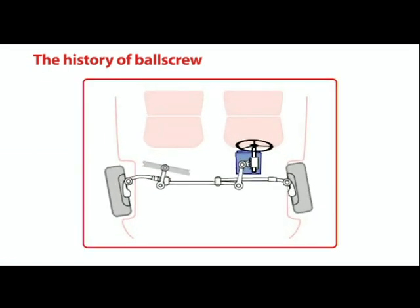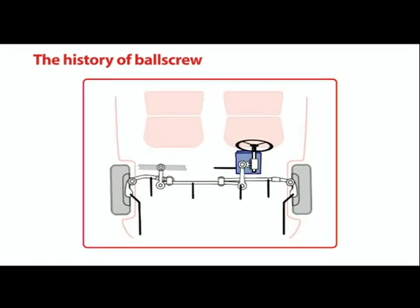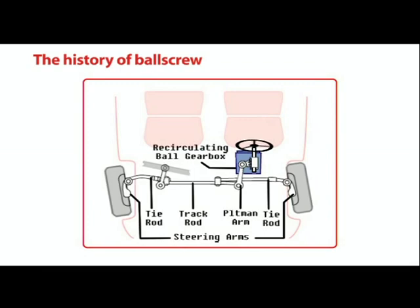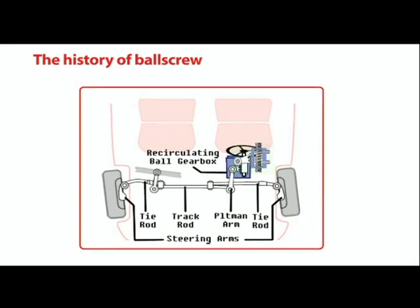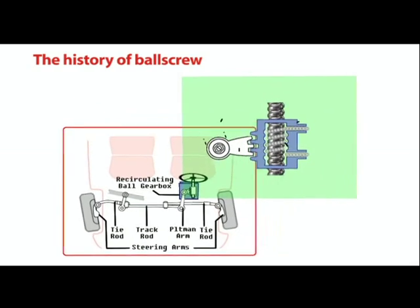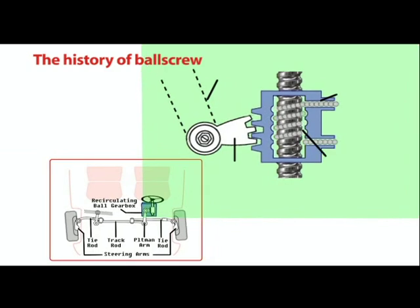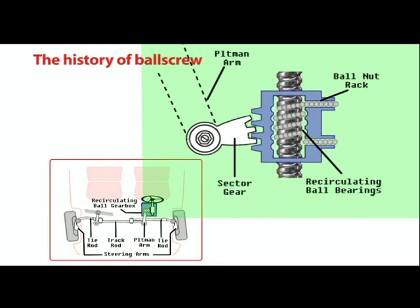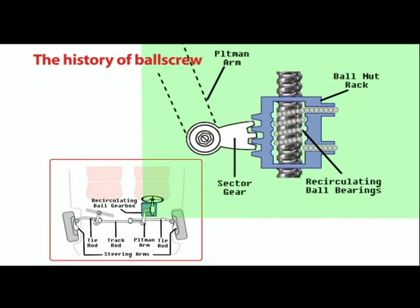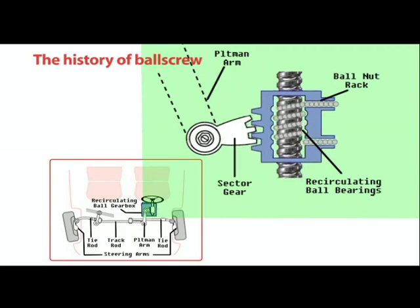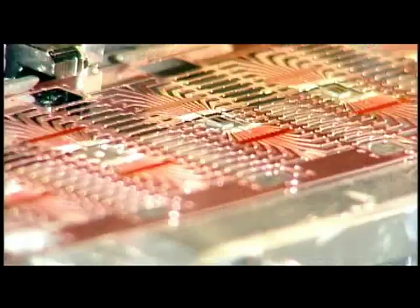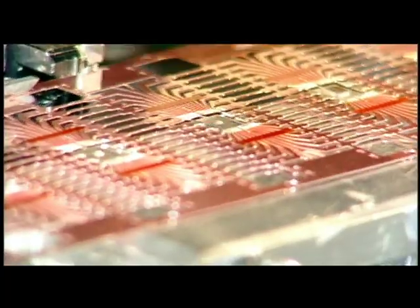The first attempt to place ball bearings between a nut and screw, replacing sliding friction with rolling friction, was made in 1898. Ball screws were applied to automotive steering systems in the 1940s and subsequently were used in many kinds of industries, including the machine tool and semiconductor industries.